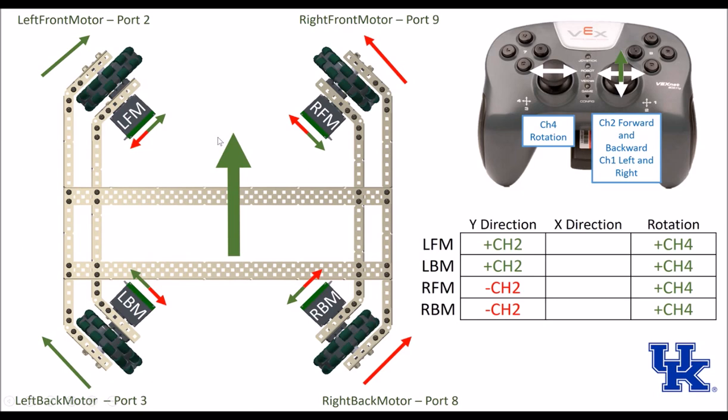When we move forward, it's going to act very similarly to other robots, where the left side of our robot is going to go clockwise and the right side is going to go counterclockwise. In our programming, our left motors are going to get the true value and our right motors are going to get the inverse value — so these will move clockwise and these will move counterclockwise.